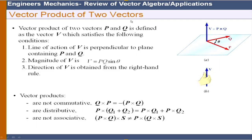Now the vector (cross) product of two vectors: P × Q gives a new vector V that is perpendicular to the plane containing P and Q, with magnitude |V| = PQ·sin(θ), and direction determined by the right-hand thumb rule. Three important aspects: the resulting vector is perpendicular to the plane of P and Q, its direction follows the right-hand rule, and its magnitude is PQ·sin(θ).